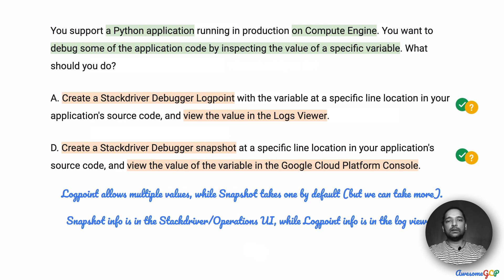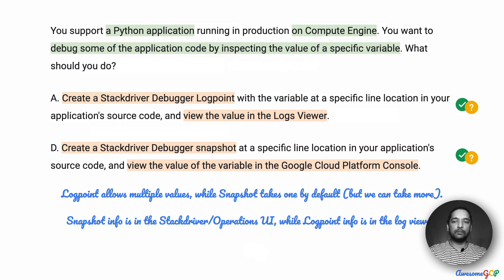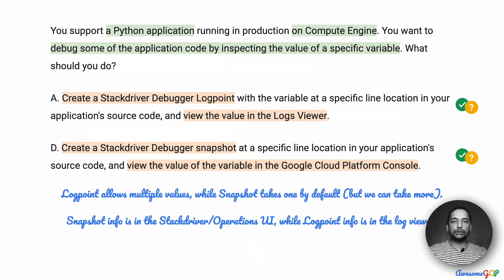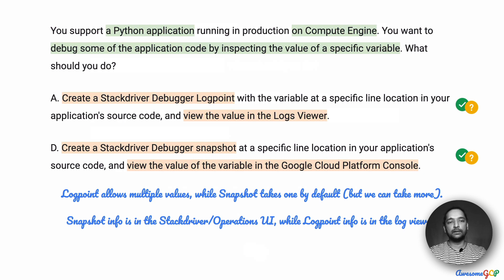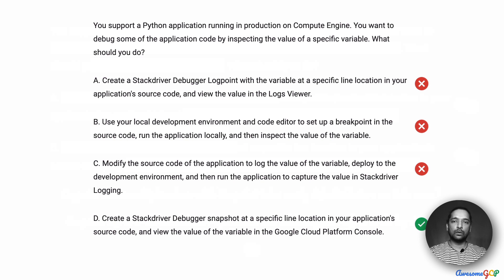Comparing the two options we've kept: option A uses the debugger logpoint and option D uses the debugger snapshot. The difference for this particular requirement is very narrow. The logpoint allows multiple values while the snapshot allows one by default — but we can take more. In this requirement, there is no specification to collect multiple values; we just need one, so a snapshot should do. The snapshot info is also immediately available in the UI — we don't have to go elsewhere and filter logs to find the value. So the snapshot approach is a bit easier, and I'm going with option D as the best option for solving this requirement.